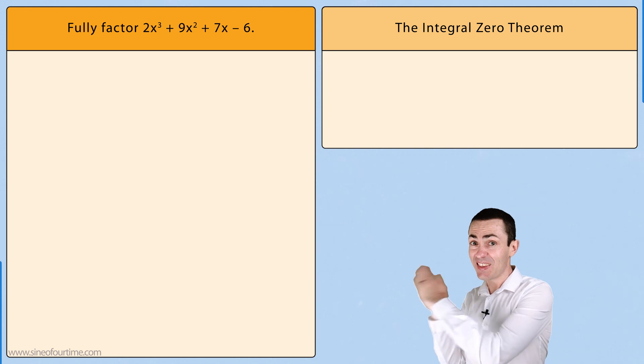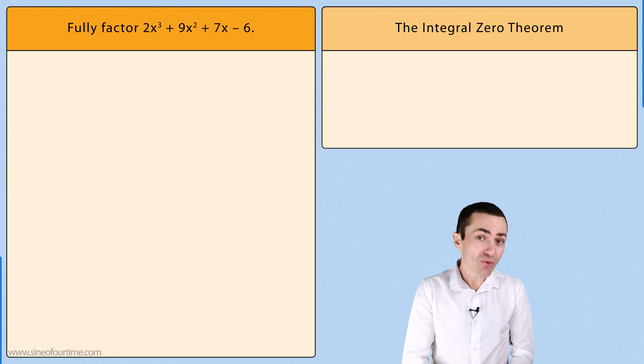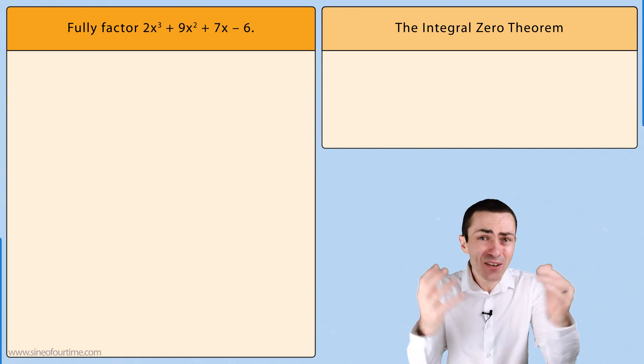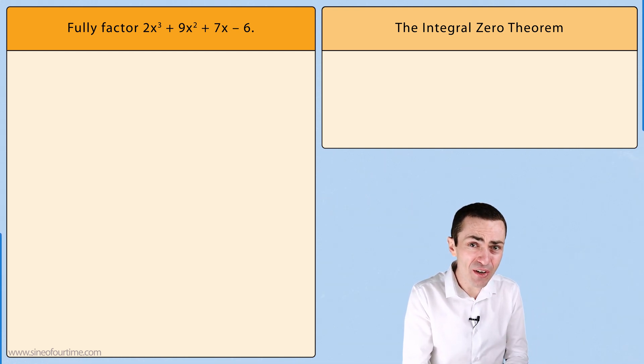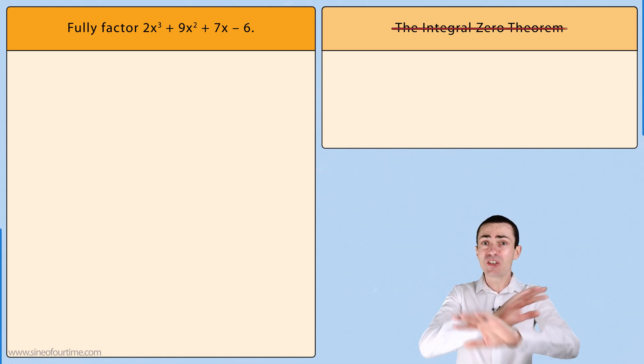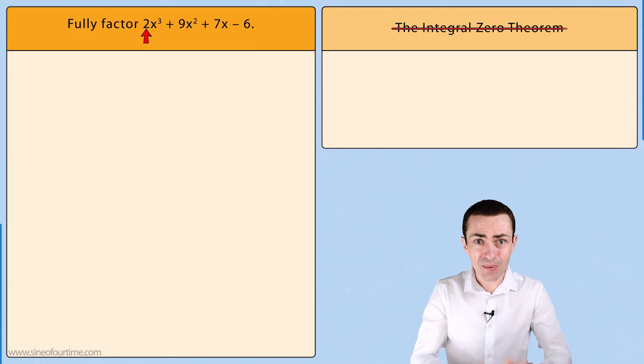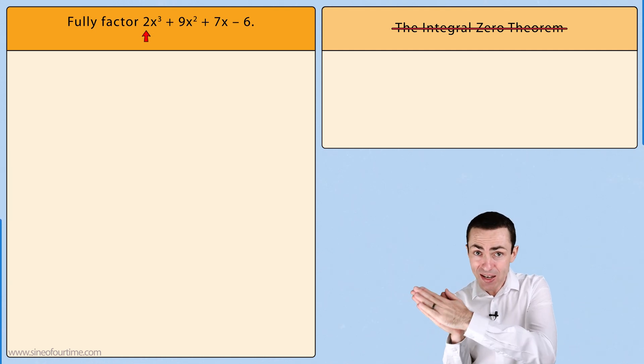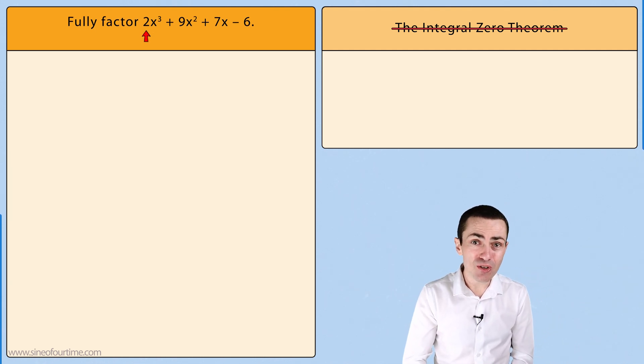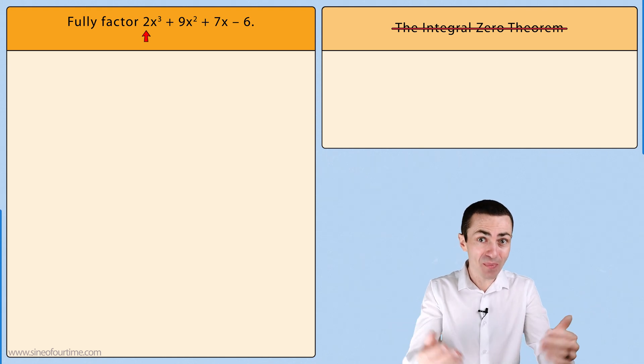Let's consider a question like this where we are asked to fully factor 2x³ + 9x² + 7x - 6. Unfortunately we cannot rely on the integral zero theorem because the leading coefficient is not equal to 1. In order to be able to fully factor this problem I have to introduce you to yet another theorem